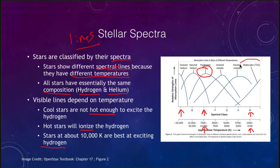In the very coolest stars, we begin to see molecules. Molecules like titanium oxide could not be present in the high temperatures of much hotter stars. So the spectral lines tell us about the temperatures of the star.